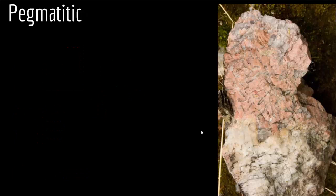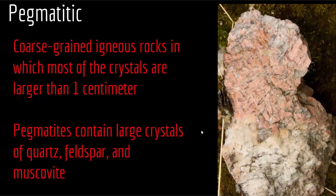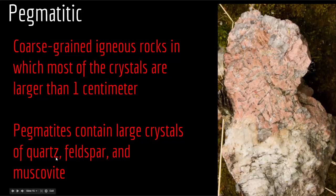The last type is pegmatitic igneous texture — a coarse-grained igneous rock in which most crystals are larger than one centimeter. Pegmatites contain large crystals of quartz, feldspar, and muscovite. The large crystals in pegmatite do not result from unusually long cooling histories; rather, they are the consequence of a fluid-rich environment that enhances crystallization. So unlike other large-crystal rocks, the big crystals of quartz, feldspar, and muscovite in pegmatites result from fluid-rich environments.